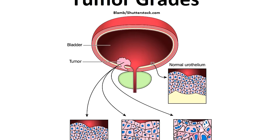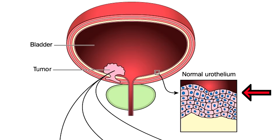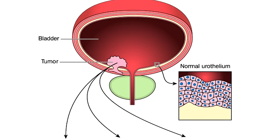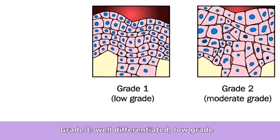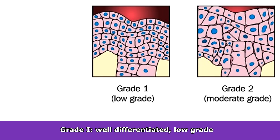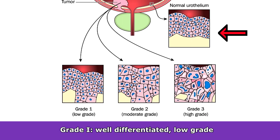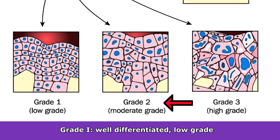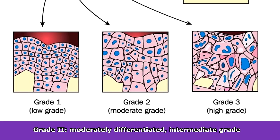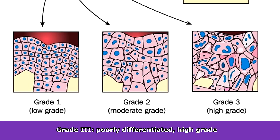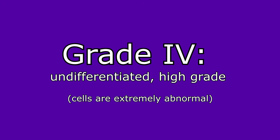Here you'll see an illustration of a tumor found in a bladder, and on the right is what the normal cells should look like in the bladder. Grade one is well differentiated and low grade — notice how the cells pretty much mirror the normal healthy cells in look and arrangement. Grade two is moderately differentiated, intermediate grade, and these cells look a little bit different than those normal cells. Grade three is poorly differentiated and high grade — various sizes and arrangement make it very abnormal compared to normal cells. Some scales also include grade four, termed undifferentiated and considered high grade, where the cells are extremely abnormal.